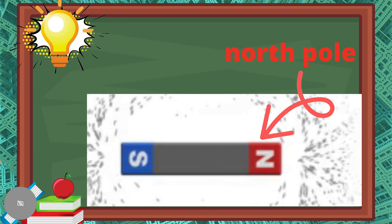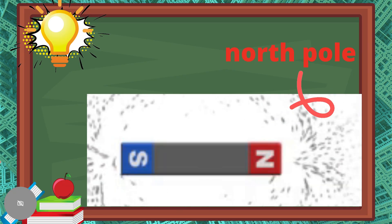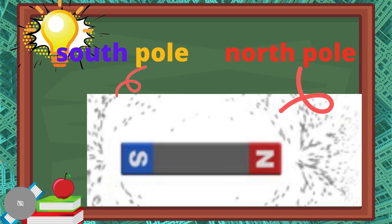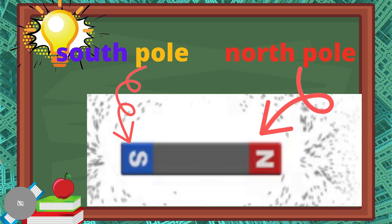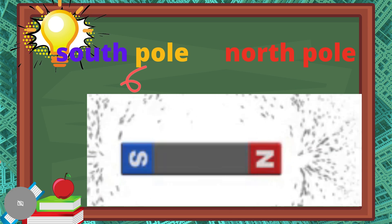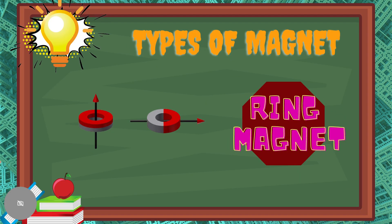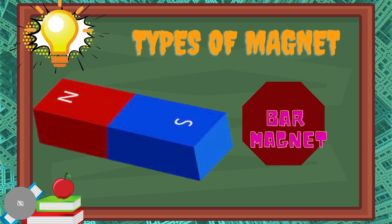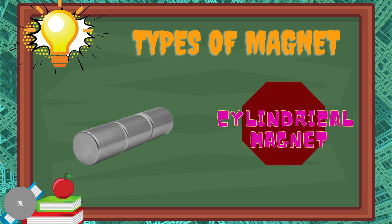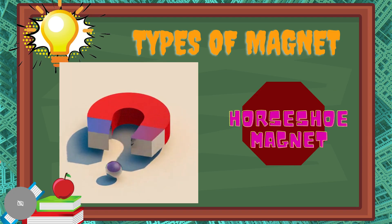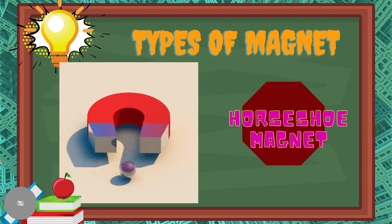One end of a bar magnet is the north pole and the opposite end is the south pole. There are several types of magnets, like ring magnet, bar magnet, cylindrical magnet, and horseshoe magnet.